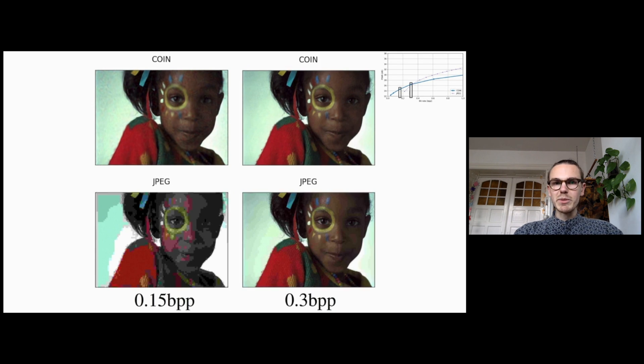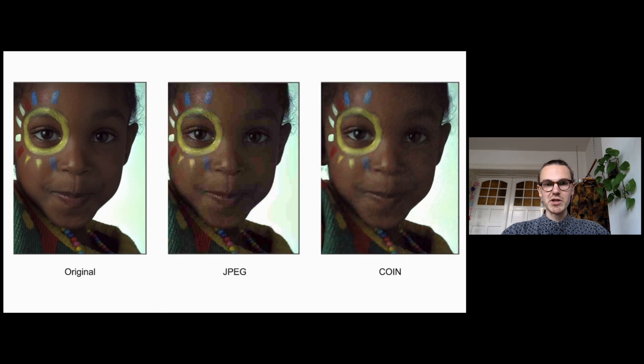At 0.15 BPP, our method outperforms JPEG, which can be clearly seen on the residual plots on the right-hand side. The residuals for JPEG are much larger.